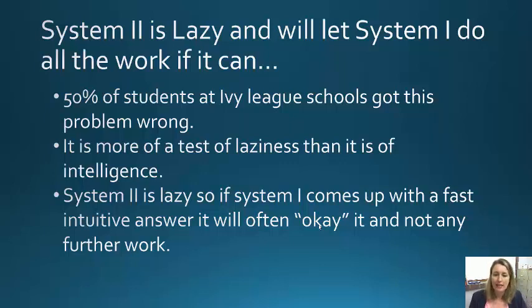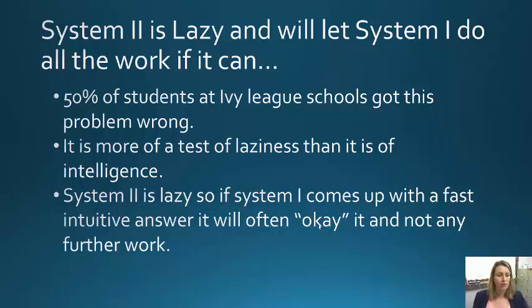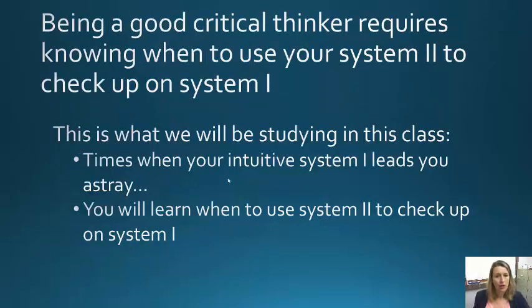System 2 is lazy. If System 1 comes up with a fast, intuitive answer, System 2 will often approve it and not work any further — it'll say, 'okay, that's enough, I don't want to think anymore.' Think of all the times you've gotten things wrong because System 2 just checked off on things without thinking them through. Being a good critical thinker requires knowing when to use System 2 to check up on System 1.